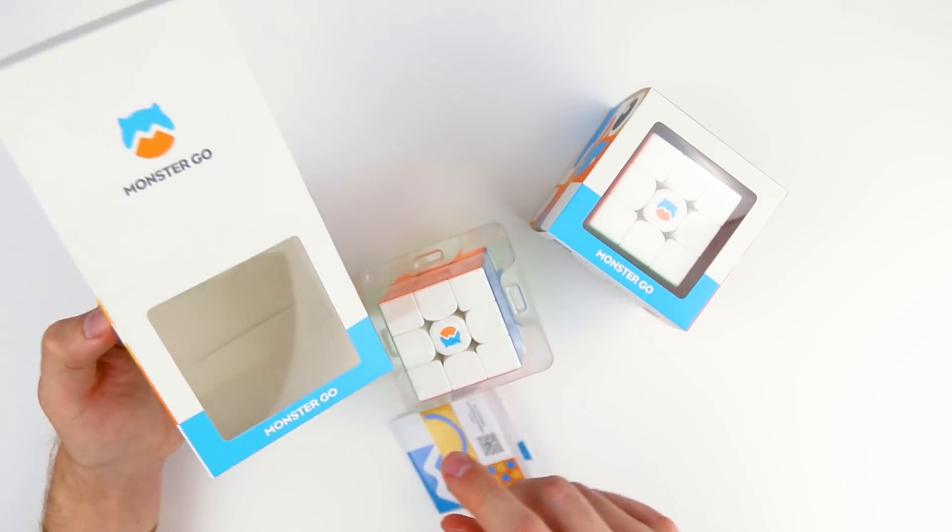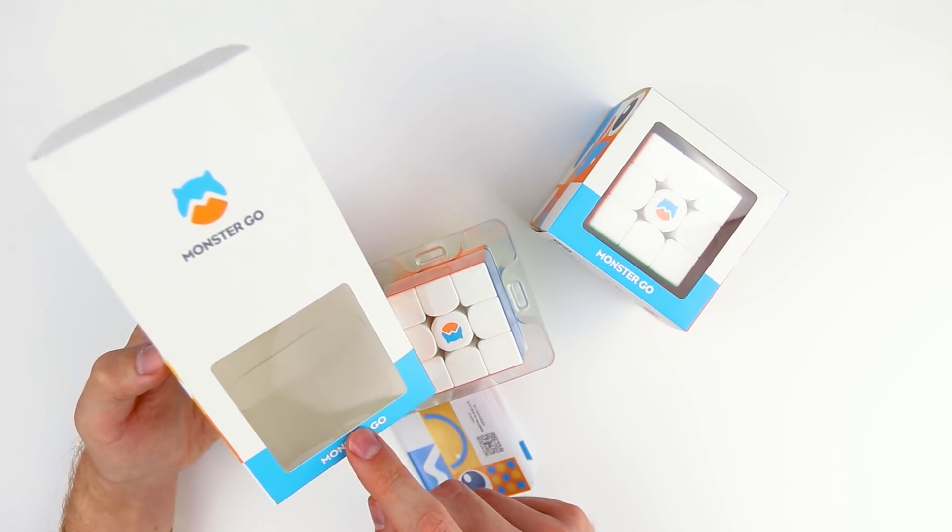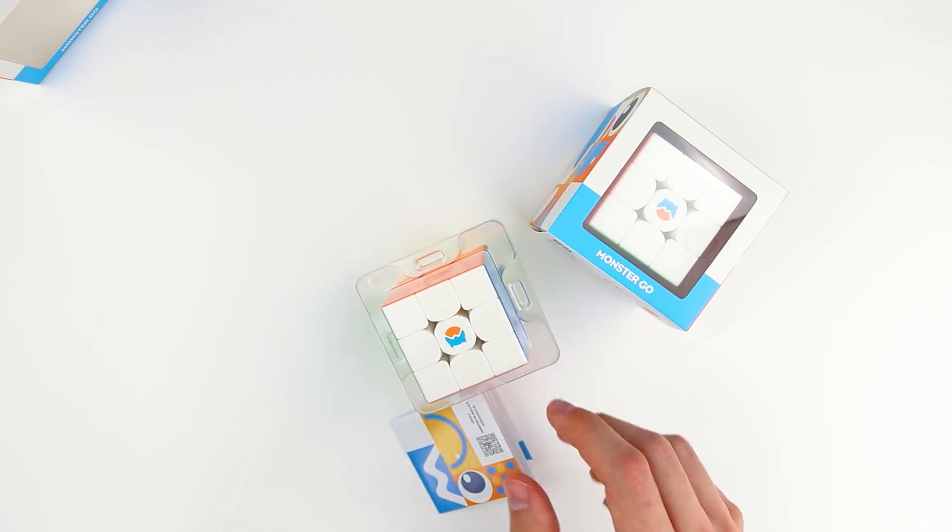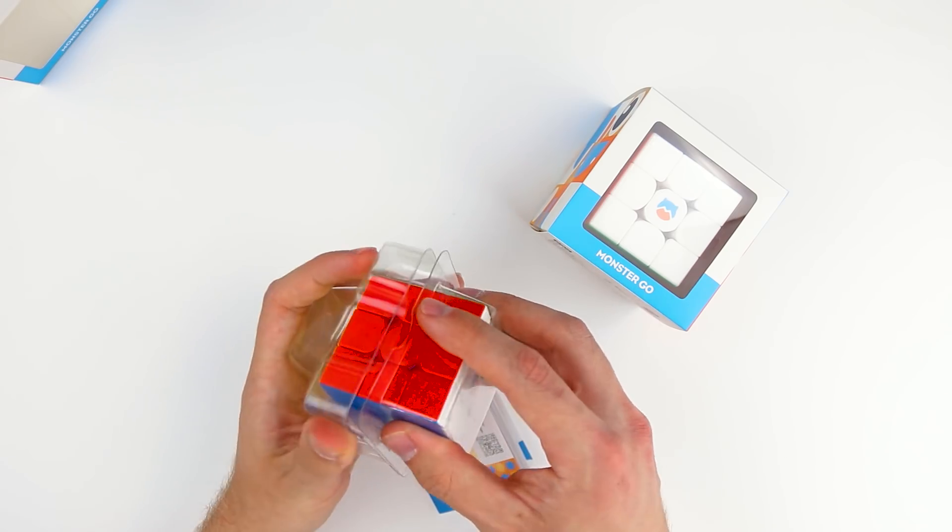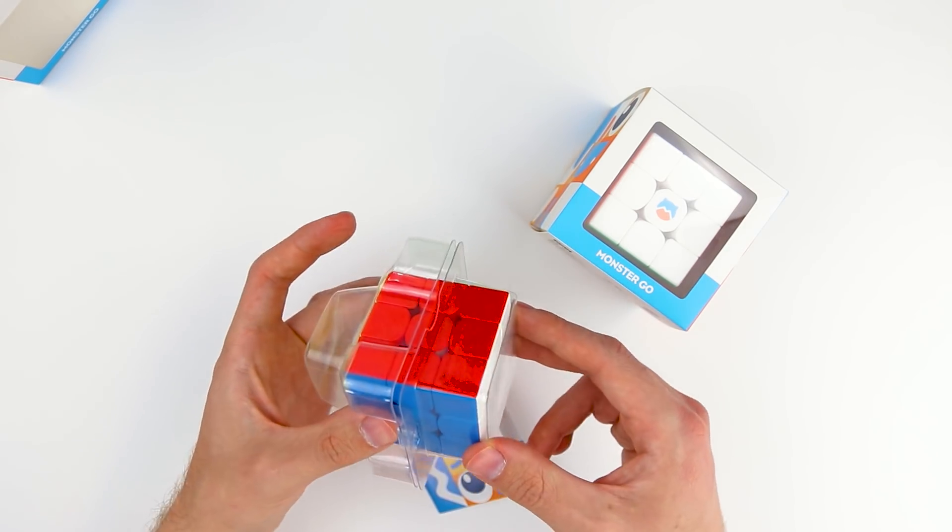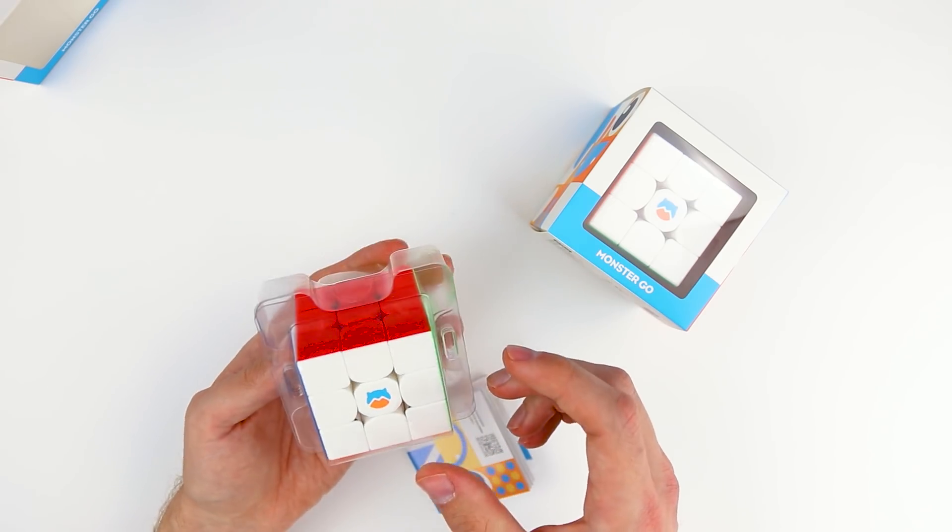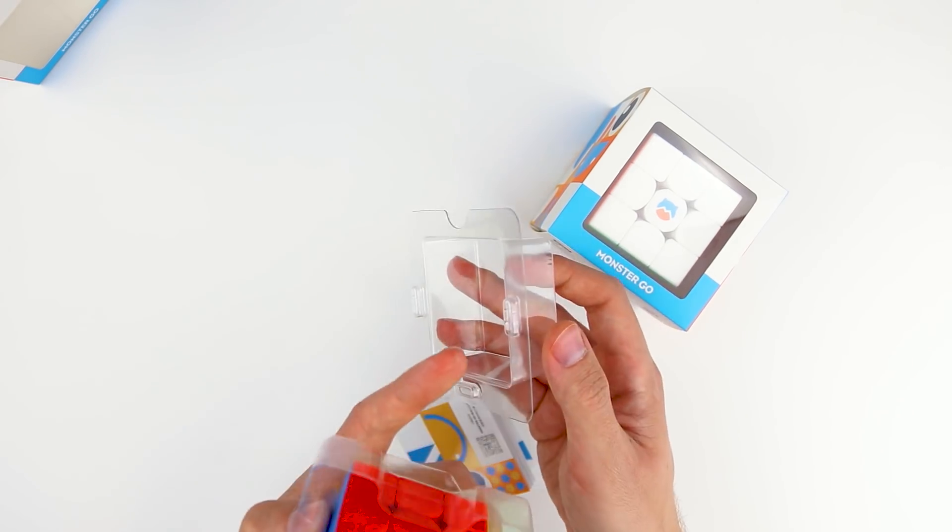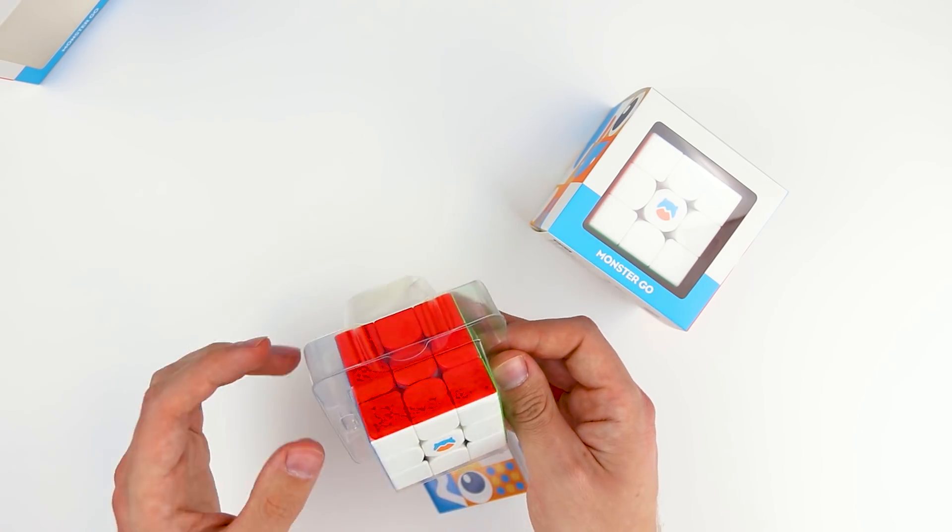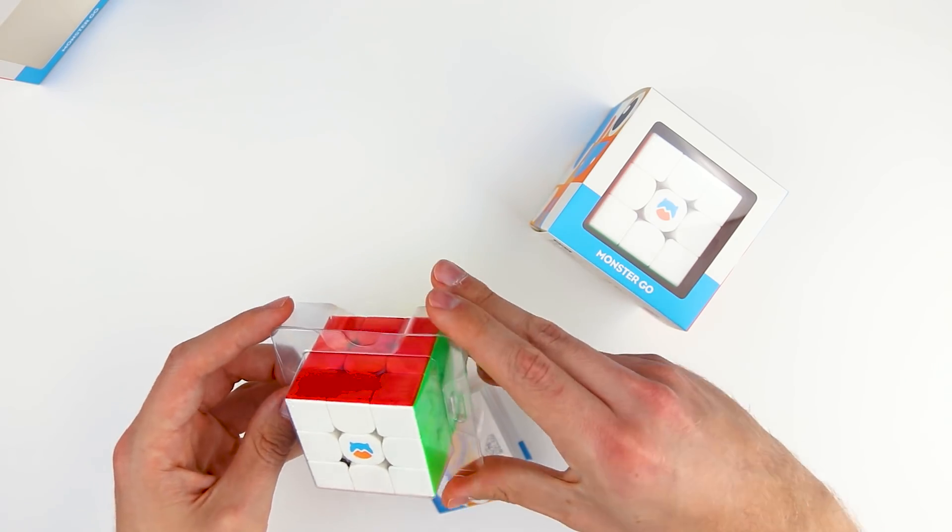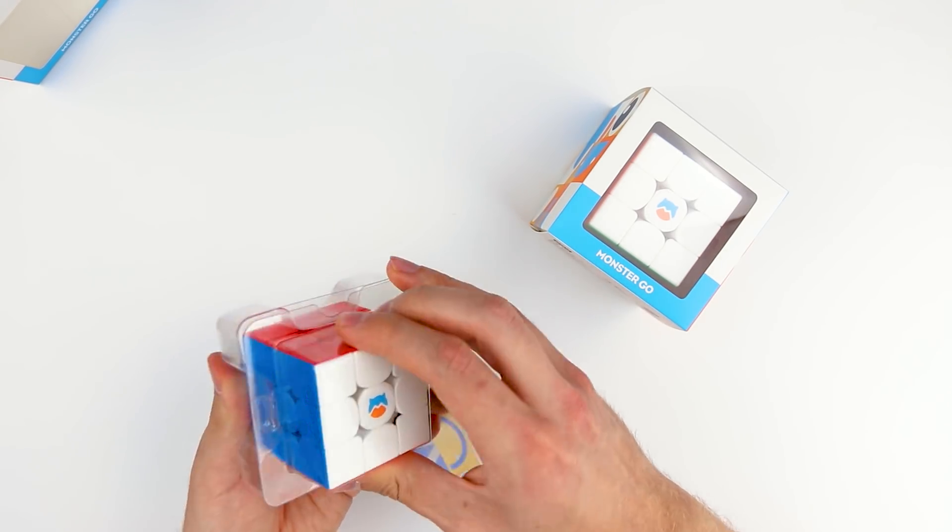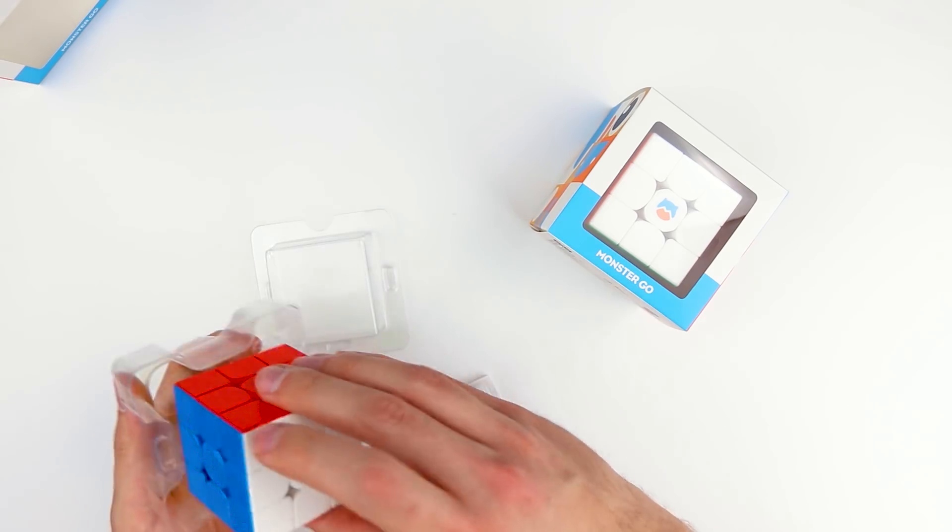So in the box, which by the way, the box will be changing to be smaller and not have a window. So in the final version, you will see that change. The plastic shell that keeps it in the box is actually surprising, because it clicks into place, which is really good for keeping the cube sturdy in its packaging. And I'd imagine also keeping it from crumpling, because you have this strong corner there. So definitely good for making sure that you can get the cubes here safely.